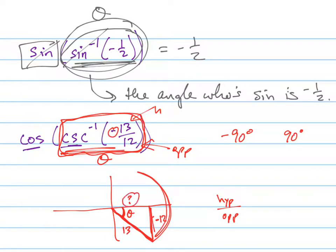And so what would this side be right here? What would that side be right here, the adjacent? So this would have to be 5 because of the Pythagorean triple, 5, 12, 13. And so what is the cosine of theta, that angle theta right there? It's 5 over 13.